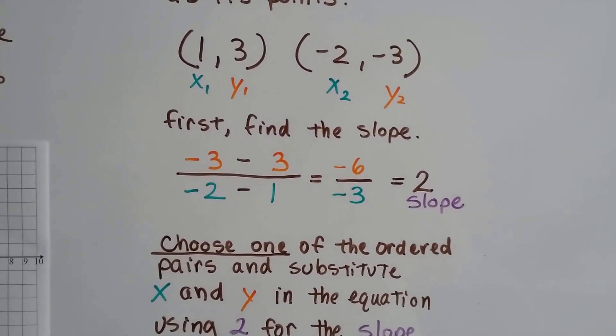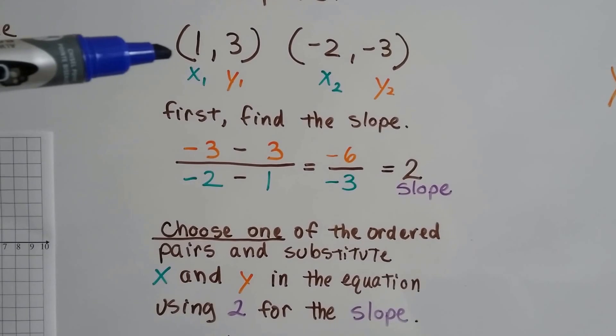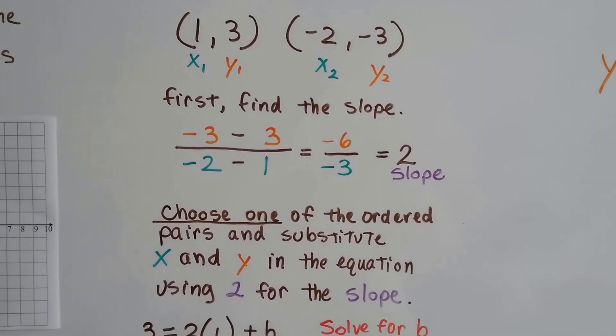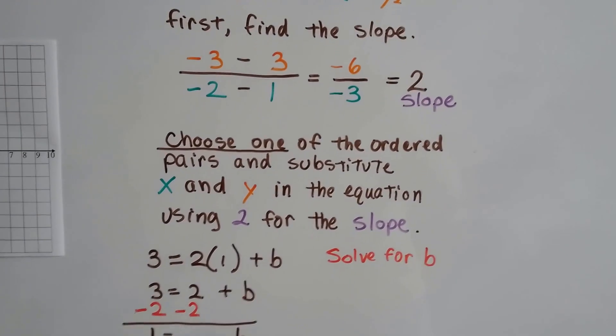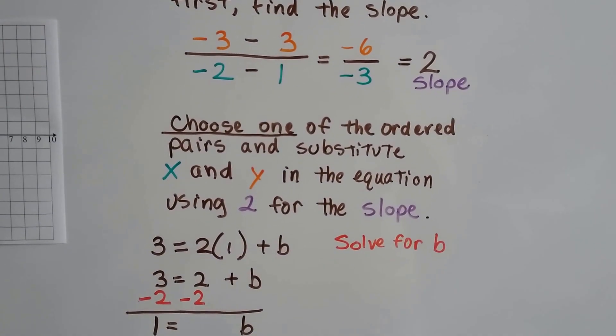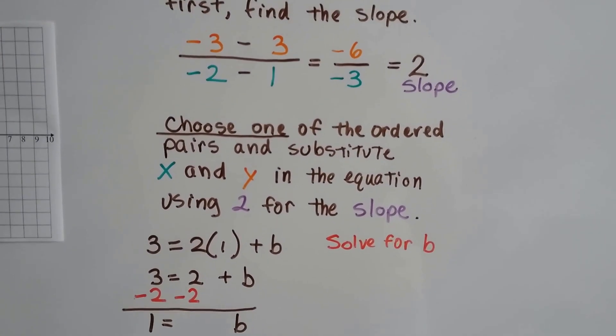Now we just choose one of the ordered pairs. It doesn't matter which one. This one's positive, so I think it's going to be easier to work with. So I chose the 1 and the 3.